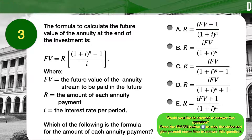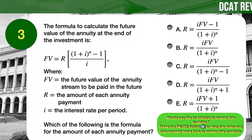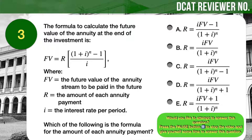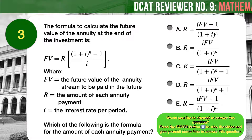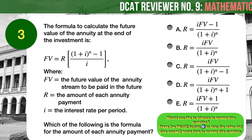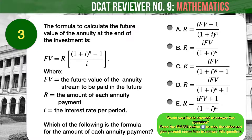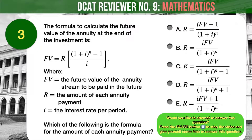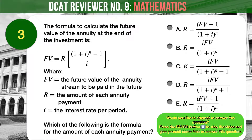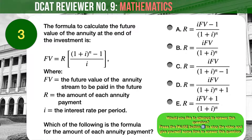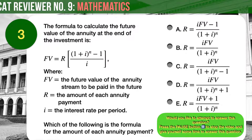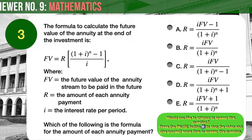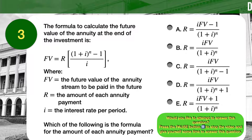Question number 3: The formula to calculate the future value of the annuity at the end of the investment is as shown, where Fv is the future value of the annuity stream to be paid in the future, R is the amount of each annuity payment, and i is the interest rate per period. Which of the following is the formula for the amount of each annuity payment?